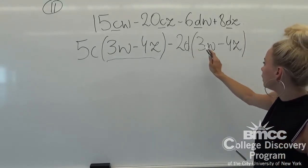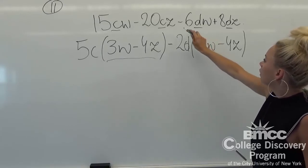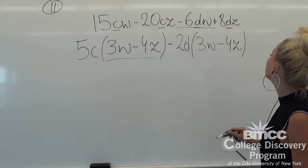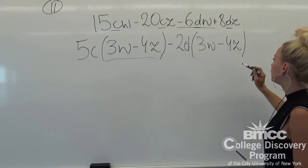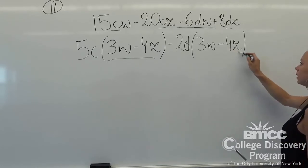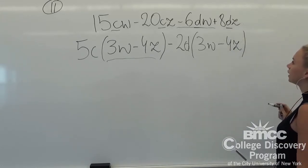It's minus 2d times 3w equals negative 6dw, and minus 2d times 4z equals plus 8dz.